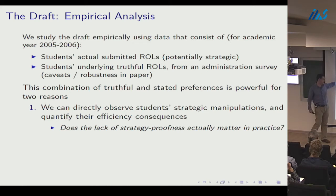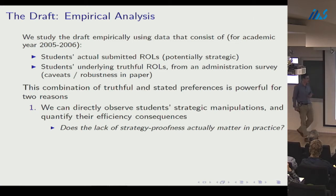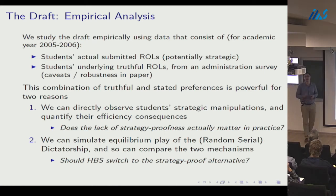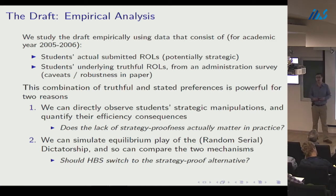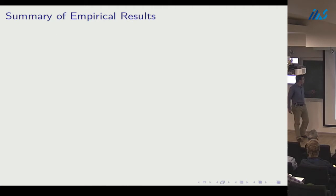This combination of true and stated preferences is powerful for two reasons. First, it allows us to directly observe strategic manipulations and quantify efficiency consequences — asking whether the lack of strategy-proofness actually matters in practice or is just a theoretical curiosity. Second, we can simulate counterfactual mechanisms using the true preferences, specifically the strategy-proof random serial dictatorship, and ask whether Harvard should switch to it.